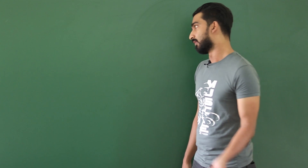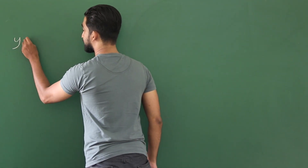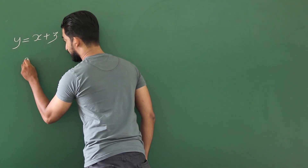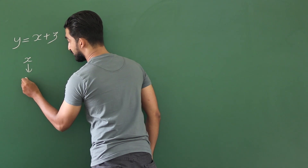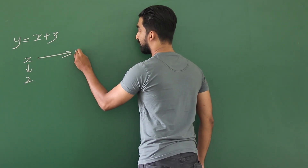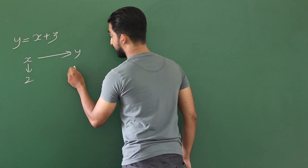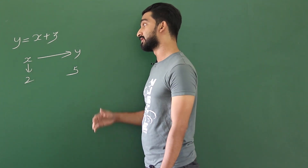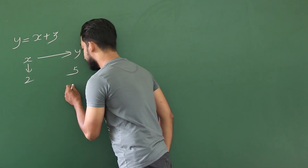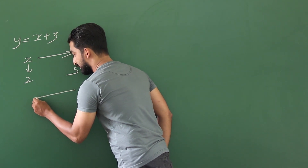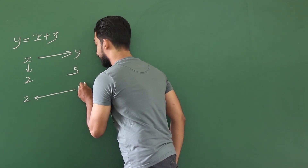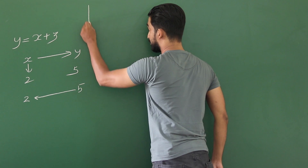Inverse function is a function which can reverse the process. Now if you consider y equals x plus 3, this is a function. When x is 2, this function gives y which is 2 plus 3 = 5. So what the inverse function does is it reverses the process — when you put 5, the inverse function should give the answer 2. You put 5, you get 2.